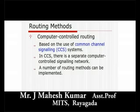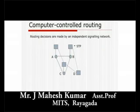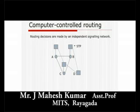The third method of routing is computer-controlled routing. Here, routing decisions are made by an independent signaling network. Computers are used in networks with common channel signaling (CCS) features. In CCS, there is a separate computer-controlled signaling network. With computers in position, a number of sophisticated route selection methods can be implemented. Computer-based routing is a standard feature in data networks.